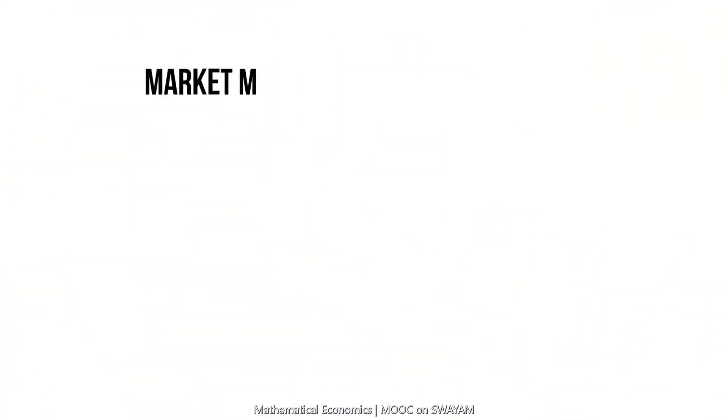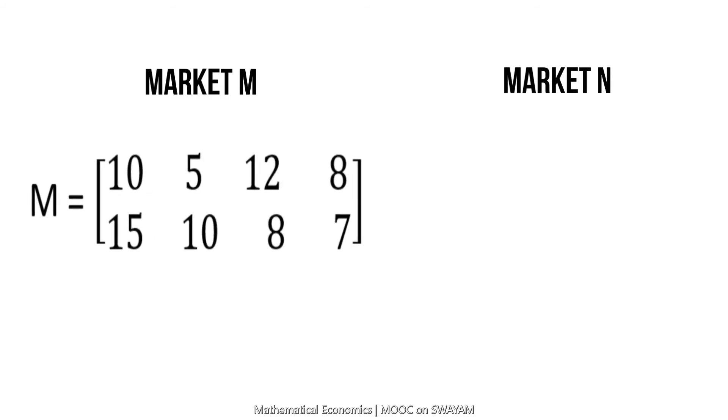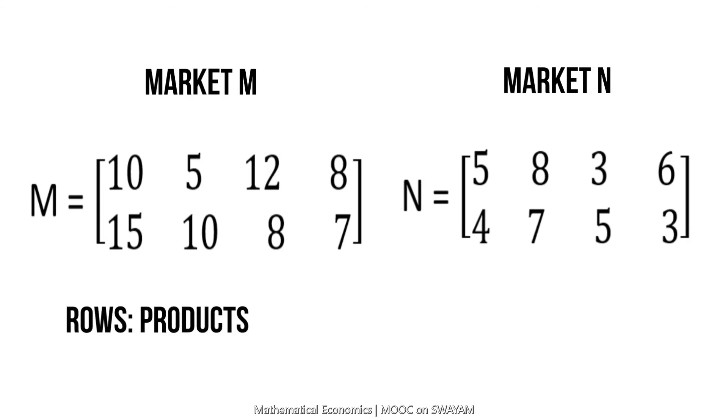Let us name the markets as M and N. Then, the weekly sales of the two products may be arranged in matrix form as shown. The rows represent the products X and Y and the columns represent the weeks of that particular month.